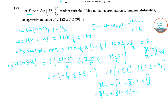Using the standard normal tables, Φ(1) = 0.8413 and Φ(0.5) = 0.6915. So the result is 0.8413 + 0.6915 − 1 = 0.5328. The answer is 0.5328.